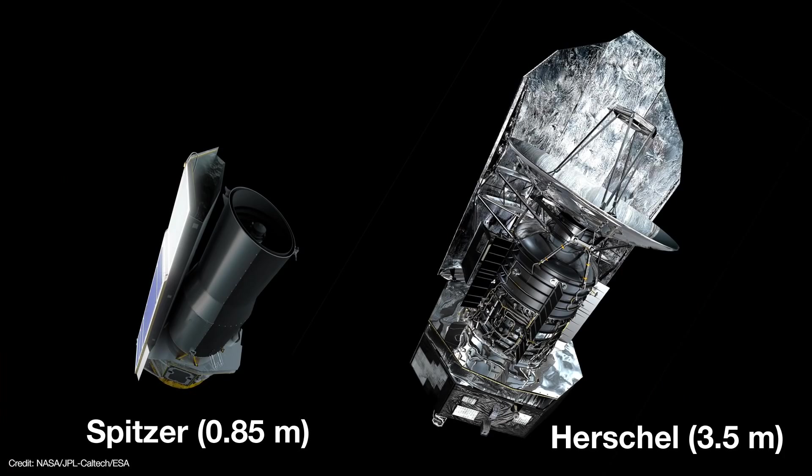Previous spacecraft, like Spitzer and Herschel, used liquid helium cryostats to bring their instruments down to similar temperatures. As the liquid helium boils off, it carries away heat. But once all the liquid helium is gone, the instruments warm up.